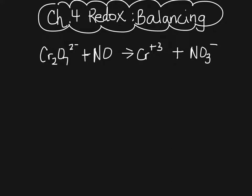Anytime you are balancing these half reactions, the first step is to assign your oxidation numbers. You should have gotten plus 6 for chromium, and oxygen is minus 2. Then the next nitrogen is plus 2, and that oxygen is minus 2. The chromium ion has a charge on it, so that is its oxidation number. Then the next nitrogen ends up being plus 5, and oxygen is minus 2. That's the first step.